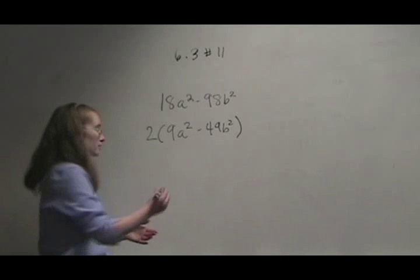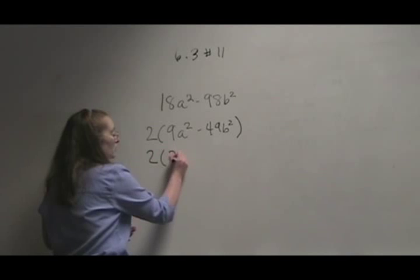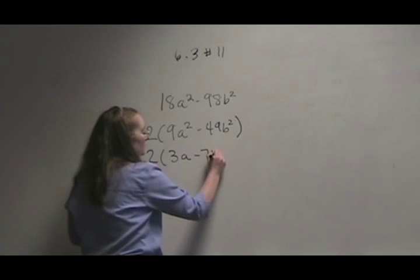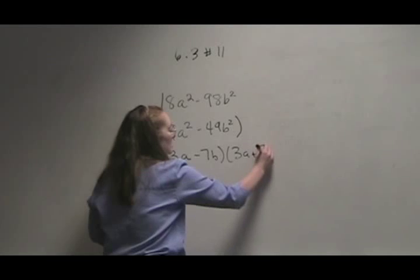So now we simply do our perfect square. That means we are left with 3a minus 7b, 3a plus 7b.